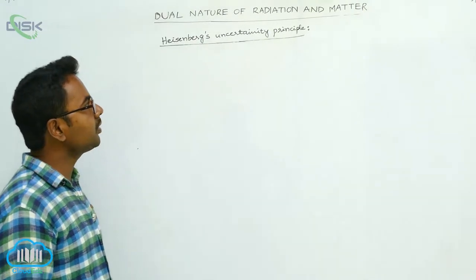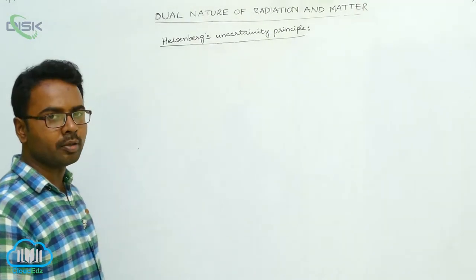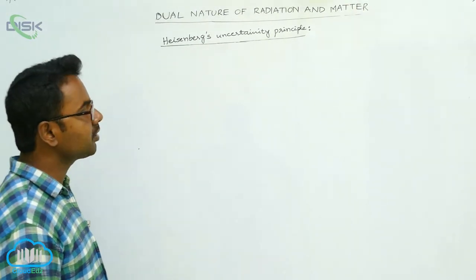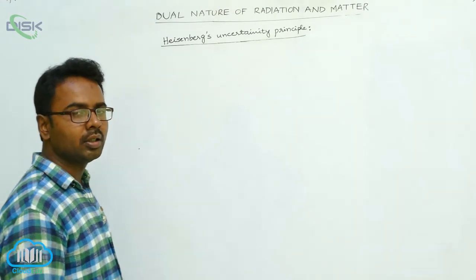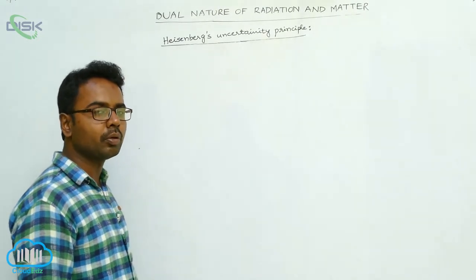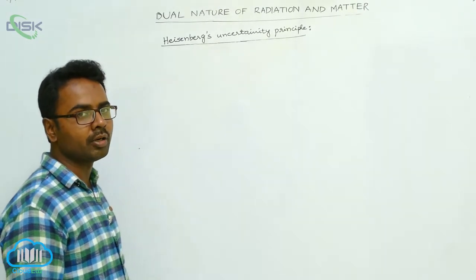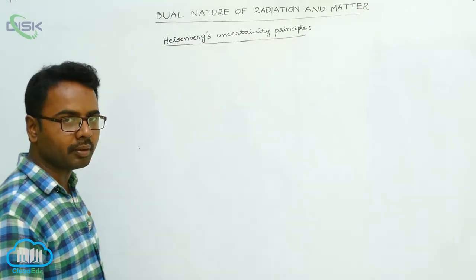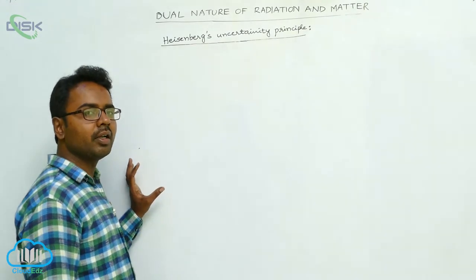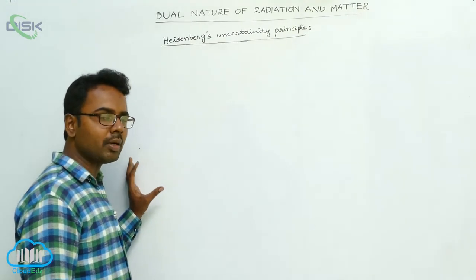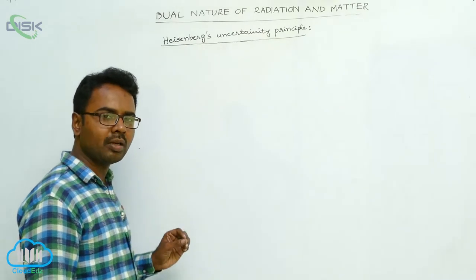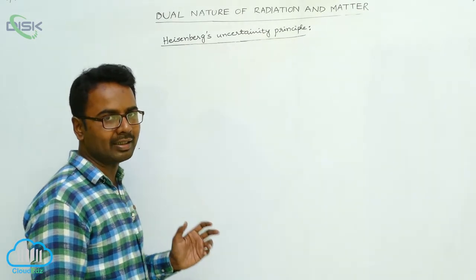Here we discuss Heisenberg's Uncertainty Principle. According to Heisenberg's Uncertainty Principle, it is not possible to measure both the position and momentum of an electron at the same time. Simultaneously, we cannot measure the position and momentum of an electron.